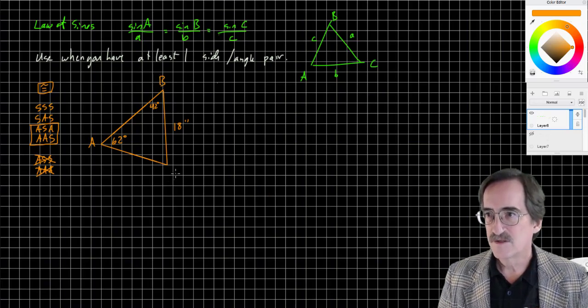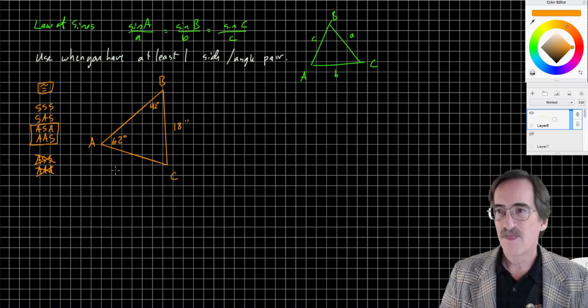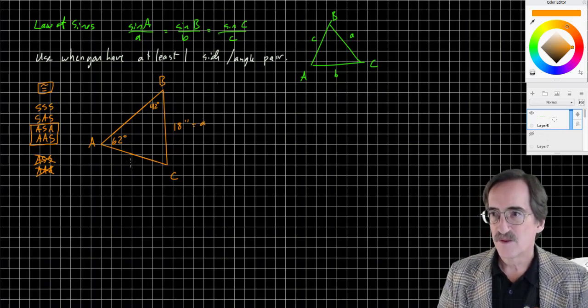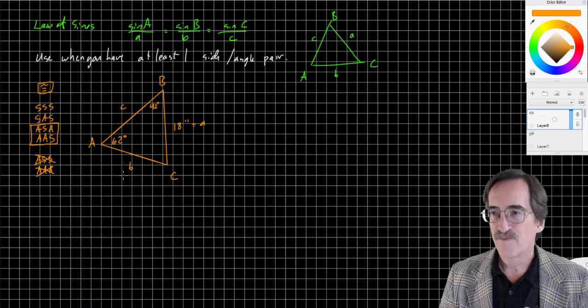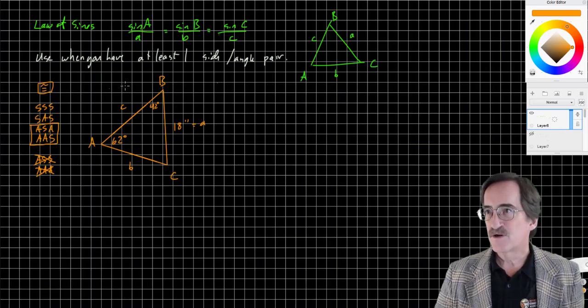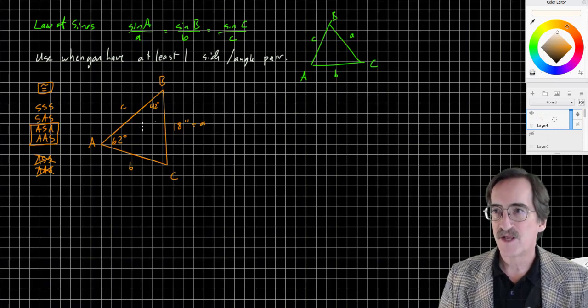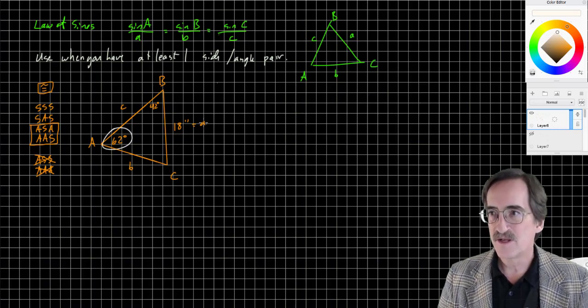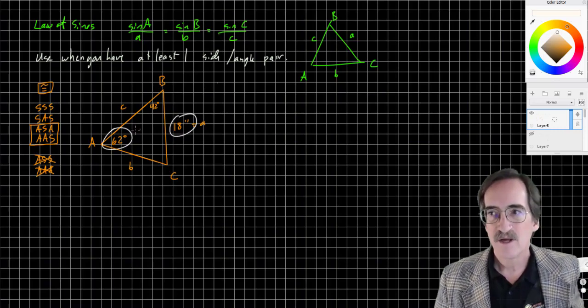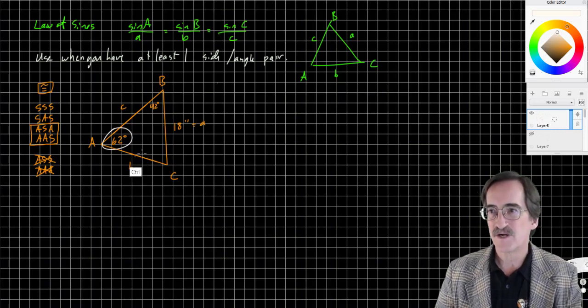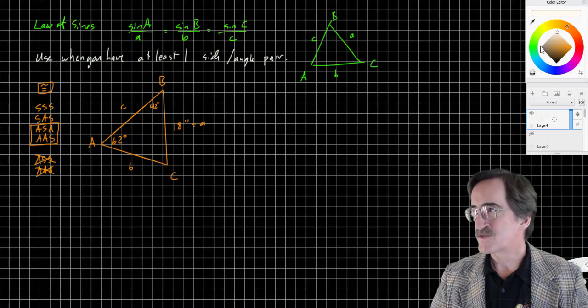Let's label for convenience: A, B, C, and lowercase a is 18, lowercase b, lowercase c. Let's ask our question: do I have at least one pair of side angles that I know? I have angle A and little a, so that's one pair that I have. So I can use the Law of Sines.